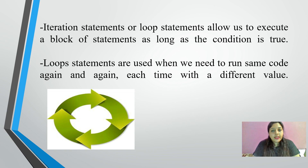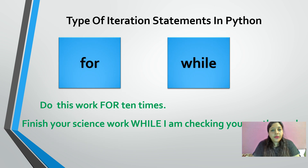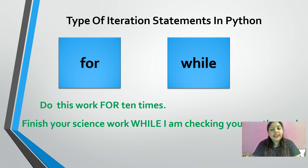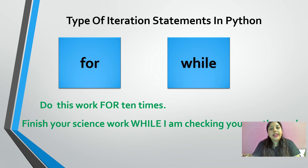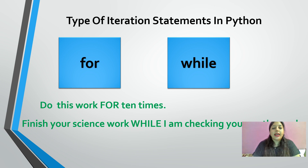Let us understand this further. There are two types of iterative statements in Python: the first one is the for loop and the second one is the while loop. Before starting actual Python programming or understanding the syntax and flowcharts, let us understand daily life examples of these two.